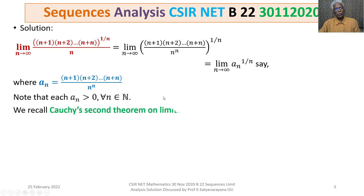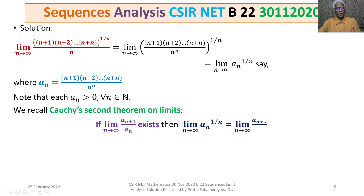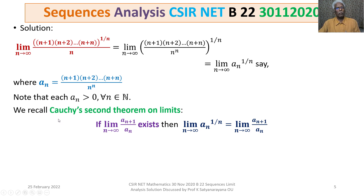We recall Cauchy's second theorem on limits. It states: suppose we have a sequence {a_n} of positive real numbers. Then if the limit as n tends to infinity of the ratio a_{n+1}/a_n exists, the limit of a_n^(1/n) not only exists but equals that same limit — that is, lim a_n^(1/n) = lim a_{n+1}/a_n.